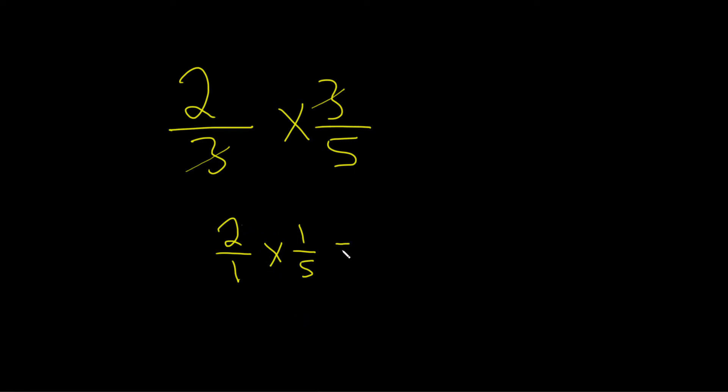So 2 times 1 is equal to 2. 1 times 5 is equal to 5. And that would be the final answer.